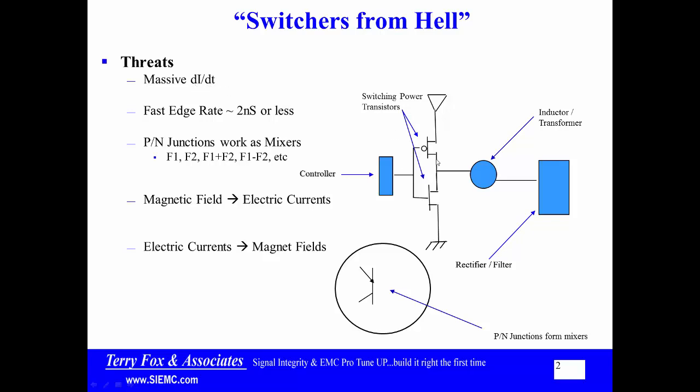And the fact is that when you start switching that much current that fast and doing it with fast edge rates, you end up with a lot of change in current with respect to time. Now, that change in current with respect to time is throwing out fairly substantial magnetic fields. And if you go back to your Maxwell's equations, magnetic fields and electric currents, the magnetic field creates an electric current. The electric current creates a current that, in turn, creates another magnetic field. So that is a problem right there, just this massive switching that you've got going on.